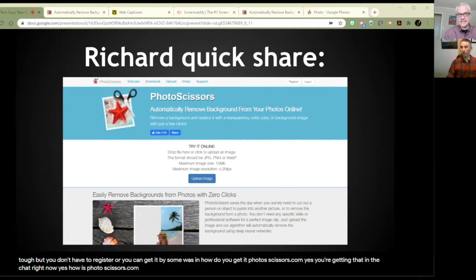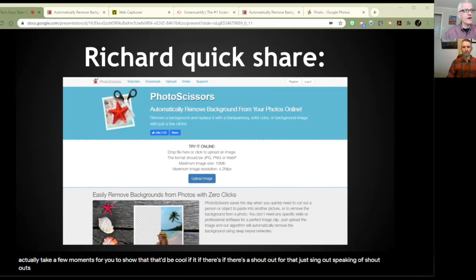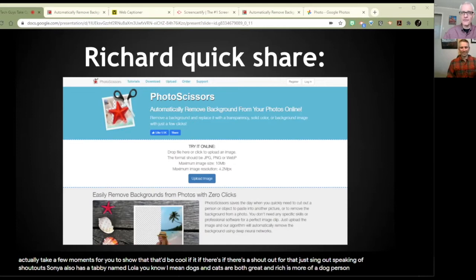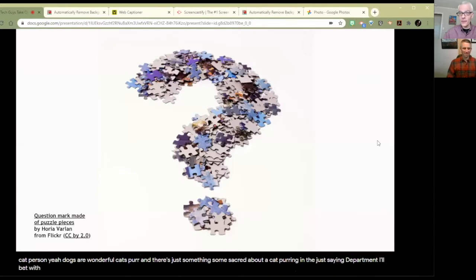The question was in, how do you get it? It's at photoscissors.com. I should point out for my PowerPoint users, PowerPoint has the same feature built into it, although it's not quite as refined. Maybe in a future episode, we'll actually take a few moments for you to show that. That'd be cool. And if there's a shout out for that, just sing out. Speaking of shout outs, Sonia also has a tabby named Lola. Dogs and cats are both great. And Richard's more of a dog person. I'm more of a cat person. Dogs are wonderful. Cats purr. Man, there's just something sacred about a cat purr in the just saying department.